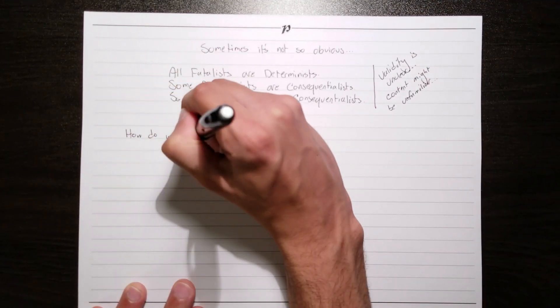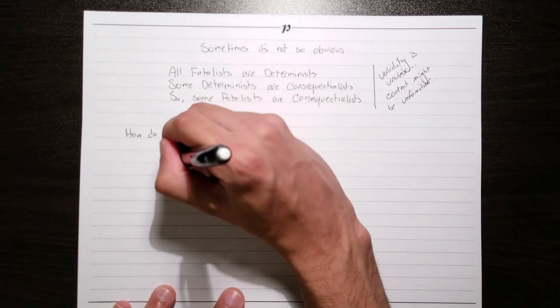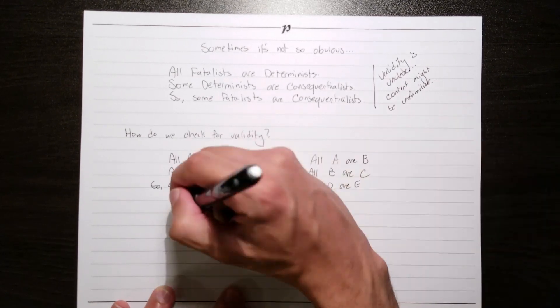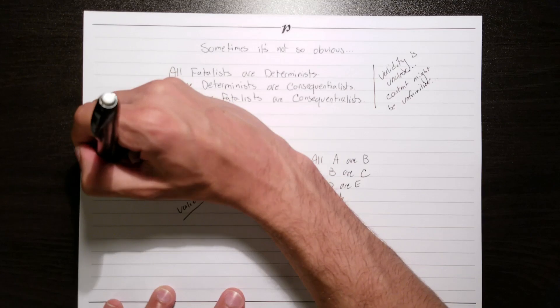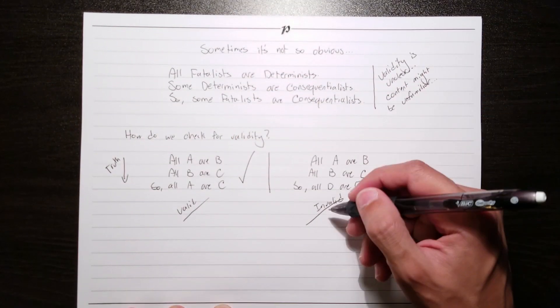So then, how do we check for validity? Well, as you might remember from my previous video, whether an argument is valid depends on whether it has a truth-preserving form. If the argument has a form that preserves truth, then we say that the argument is valid. If however, the argument has a form that does not preserve truth, then the argument is invalid.